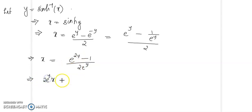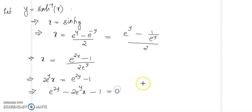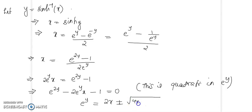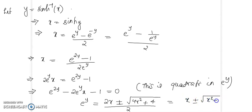Therefore, 2e^y · x = e^(2y) − 1. We get e^(2y) − 2xe^y − 1 = 0. This is a quadratic in e^y. When you solve for e^y using the quadratic formula — minus b over 2a, plus or minus root of b² − 4ac — with a = 1, b = −2x, c = −1, that gives e^y = x ± root of x² + 1.